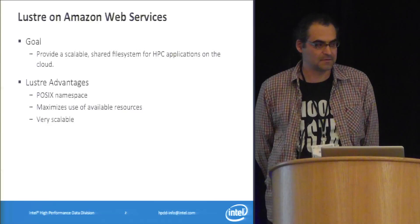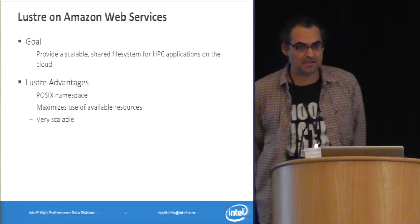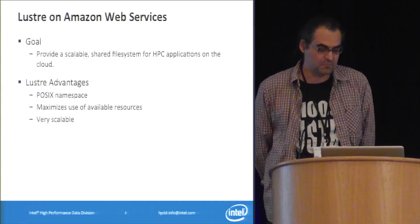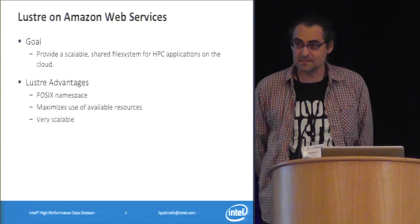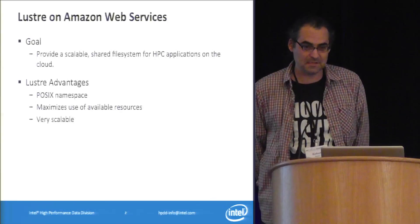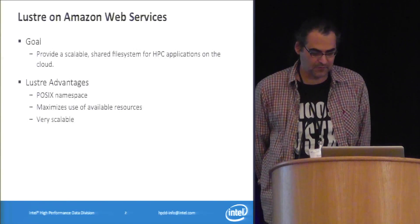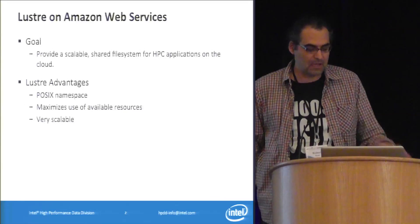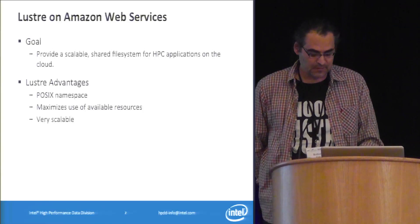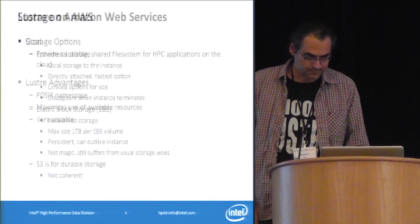The topic is Lustre on Amazon. The goal is looking at HPC applications on the cloud, which are happening more and more these days, and other applications that could use a shared parallel file system. POSIX isn't dead yet, even though we'd still like to kill it — it's still easy to use, and applications and users like it. Lustre has some advantages that might work well in the cloud: beyond being POSIX, it's very efficient and very scalable.